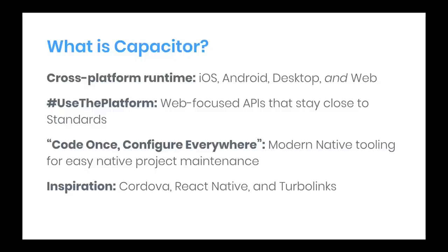The other main aspect of the project is what we're calling Code Once Configure Everywhere. We're going to embrace the modern native tooling that each platform gives us. With Cordova, we used config.xml as an abstraction layer over iOS, Android, etc. That custom config file would be translated into different permissions and configuration for plugins, icons, splash screens, and everything.